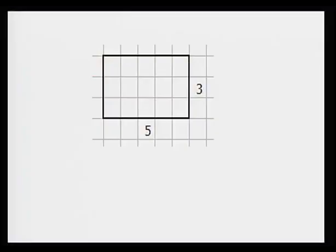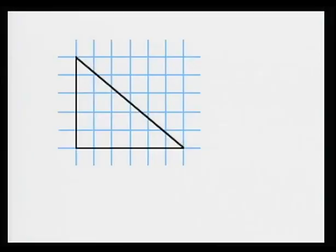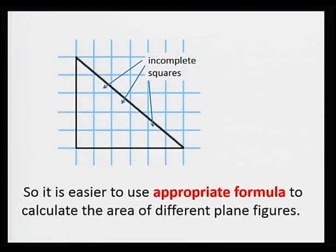Now, let's see how to calculate area of two-dimensional figures. The area of a shape can be easily determined by just placing the shape over a square grid. As you can see in the figure here, a rectangle has been placed over square grids. Then, to obtain the area, we just count the number of squares inside the rectangle, because area is whatever is inside the boundaries of the figure. While counting, here we have 15 square units. However, sometimes it is difficult to count the number of squares because we do not always have complete squares. So instead of using this method, it is easier to use an appropriate formula to calculate area of different plane figures.